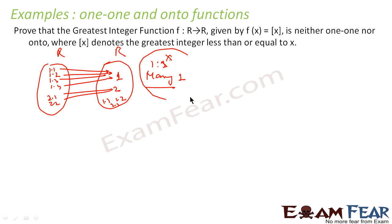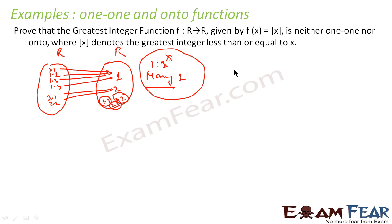The second part is whether it is onto or not. For onto, there should not be any orphan element in the codomain. But we see that there are so many orphan elements. When we talk about the greatest integer function, the output will always be some integer. But values like 1.1, 1.2, 1.3, 2.1 — these are all orphan elements in the codomain.